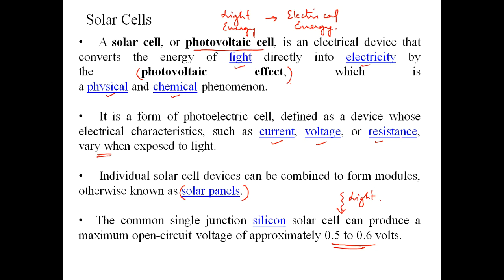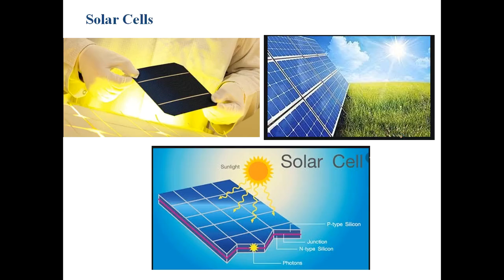In summary, a solar cell is based on the photovoltaic principle — the conversion of light energy to its corresponding electrical energy. The conversion efficiency is less due to many limitations. We haven't gone into the mathematical details of why the efficiency of a solar cell is so small.